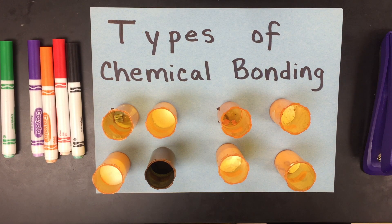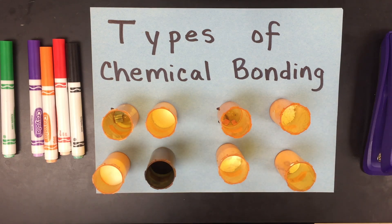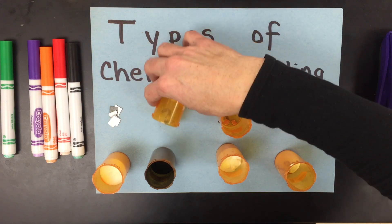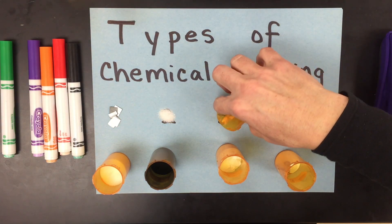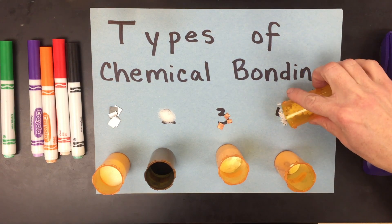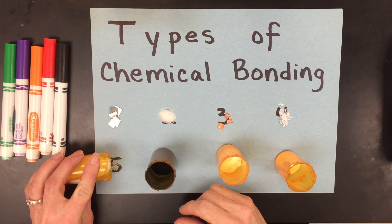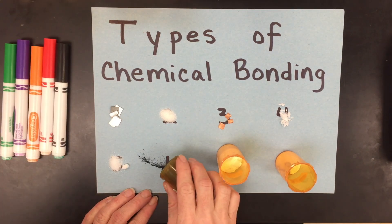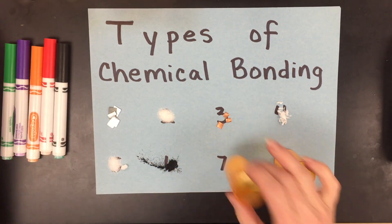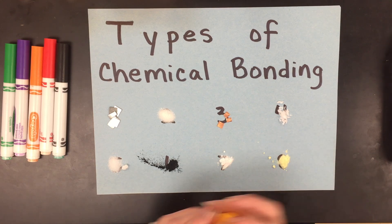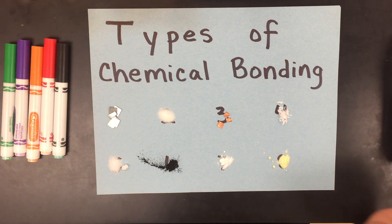In this video I'm going to show you how to build a foldable to include the information necessary to determine types of chemical bonds. In my class we typically have eight substances that we have to classify in lab. Just looking at these substances, you can't determine the chemical bond type from appearance alone — you could make an educated guess, but you'd have to know information about how it behaves physically or chemically.